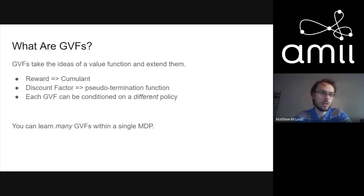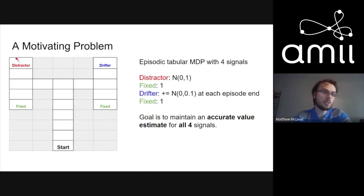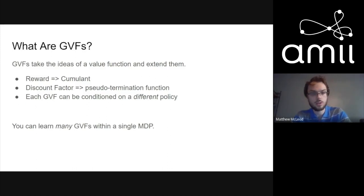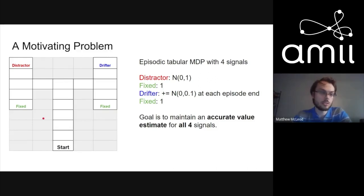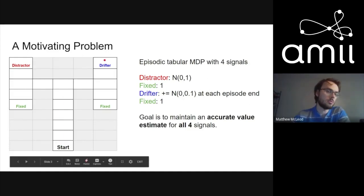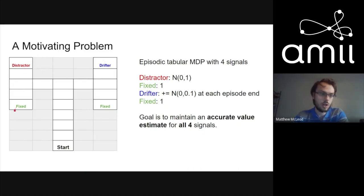GVFs extend the idea of a normal value function in a few ways. Instead of having a reward you have a cumulant or signal — in this tabular MDP you have the four cumulants, the four signals of interest. Each GVF also has a pseudo-termination function instead of a fixed discount factor, which lets you express more complex ideas. And you can condition on different policies — the policy for estimating the distractor value would naturally differ from the one for the drifter.